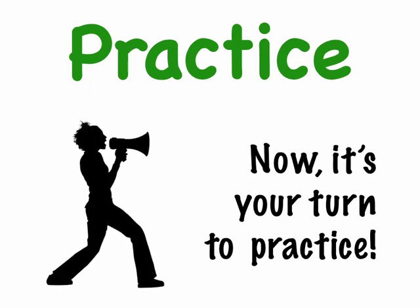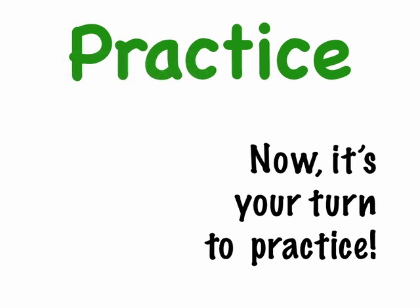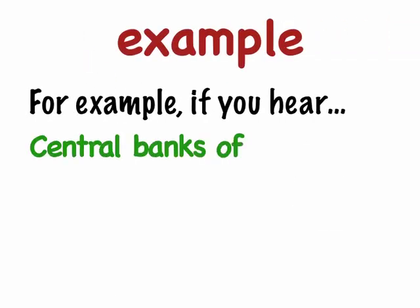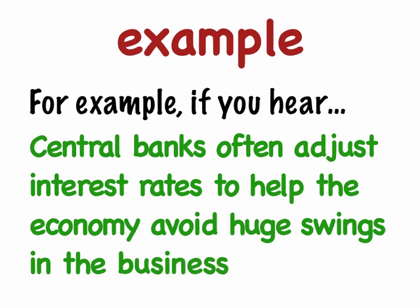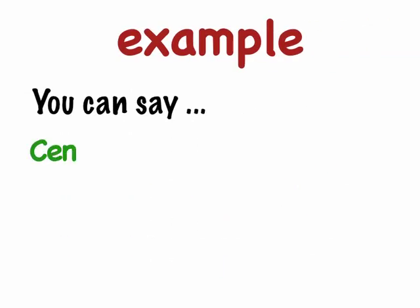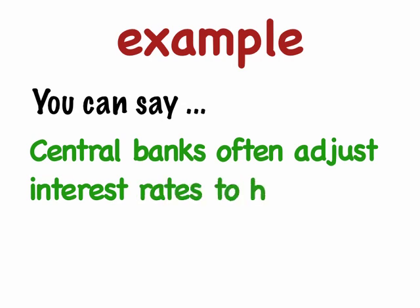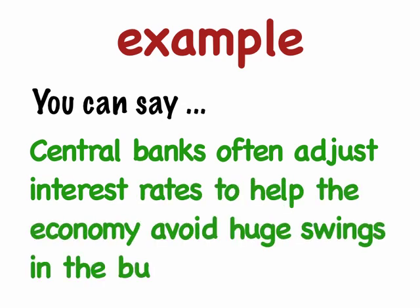Now it's your turn to practice some of the words we have studied in this lesson. In a moment you'll hear a series of sentences with a word replaced with a beep — repeat each sentence including the missing word. For example, if you hear: 'Central banks often adjust interest rates to help the economy avoid huge swings in the business —' you can say: 'Central banks often adjust interest rates to help the economy avoid huge swings in the business cycle.' We'll play the correct answer after each question. Ready? Let's give it a go.